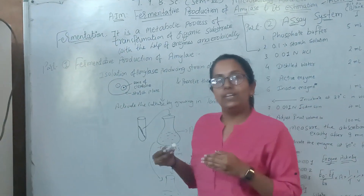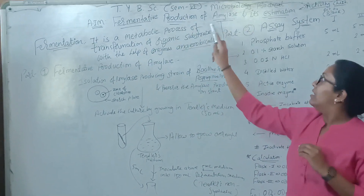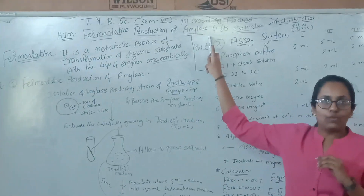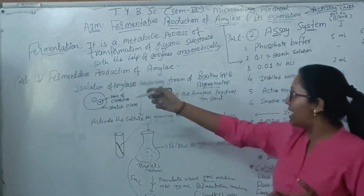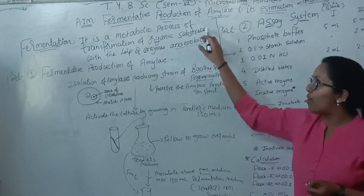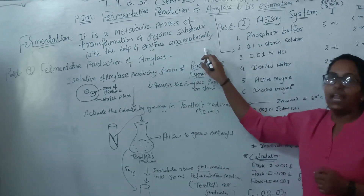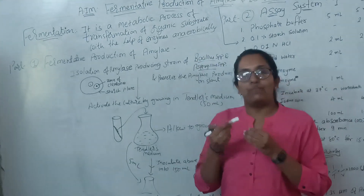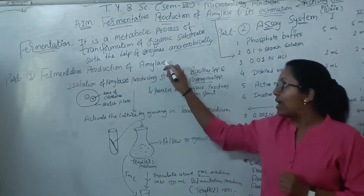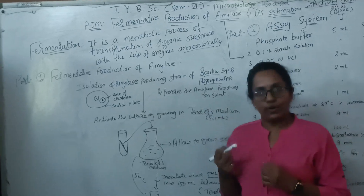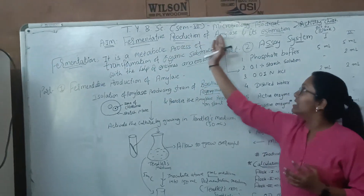First, let's understand what fermentation is and why we are performing fermentation. Fermentation is the metabolic process of transformation of organic substance with the help of enzymes, anaerobically — meaning in the absence of oxygen — where organisms produce enzyme, and that particular enzyme degrades organic substance into product. With this fermentation technology, we are going to produce amylase enzyme.